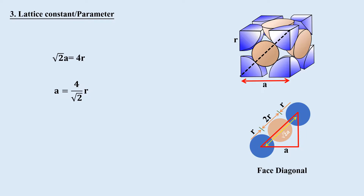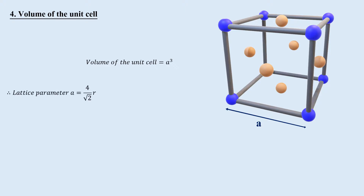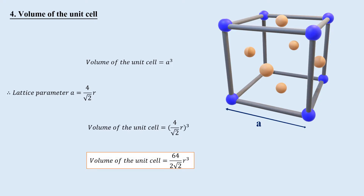Volume of the unit cell: The FCC unit cell is a cube of length A, so its volume is A³. Substituting A = 4R / √2, the volume of the unit cell becomes 64 / (2√2) · R³.